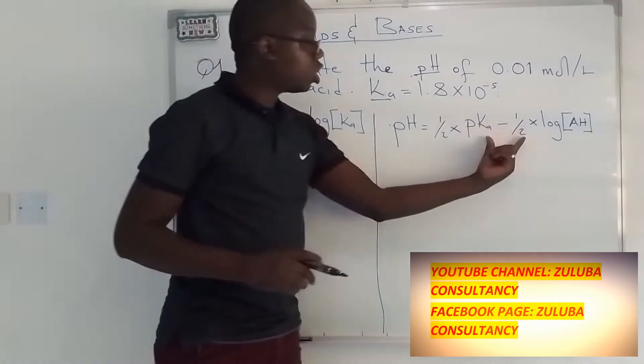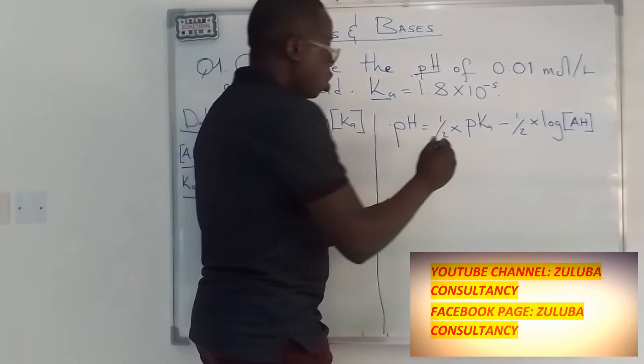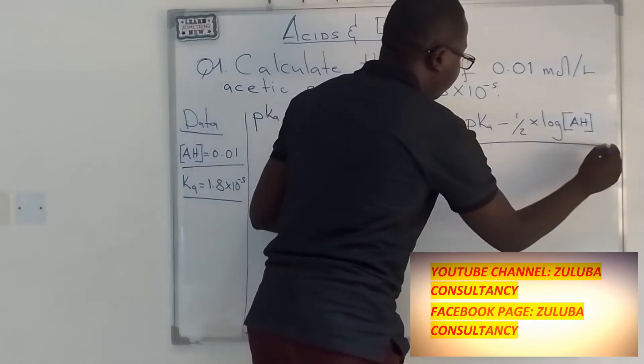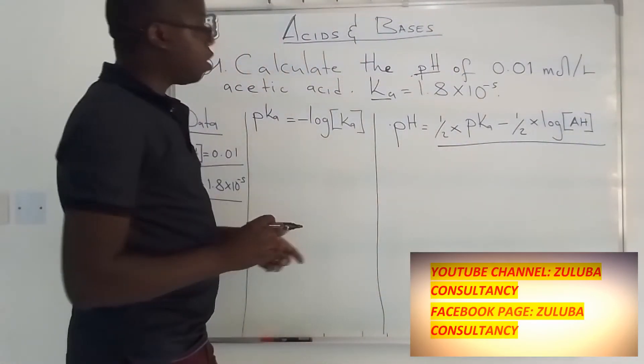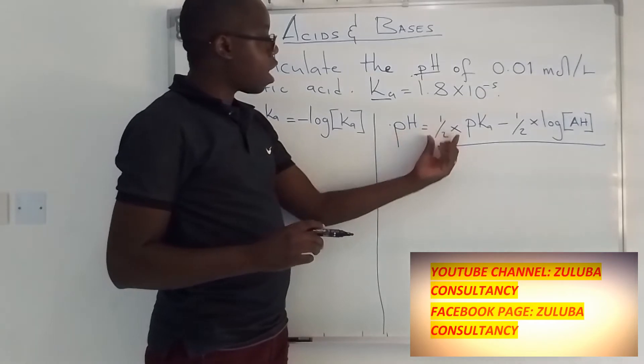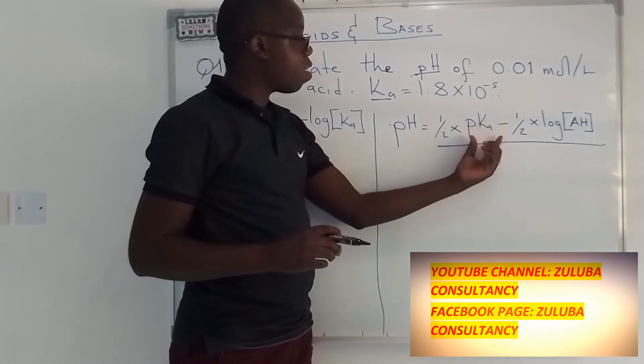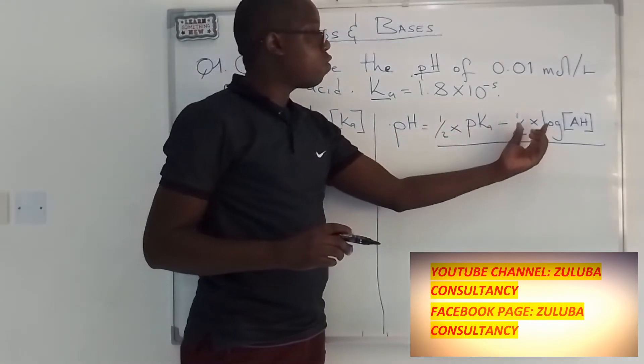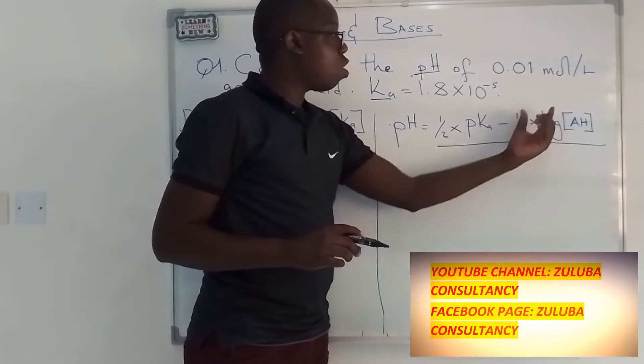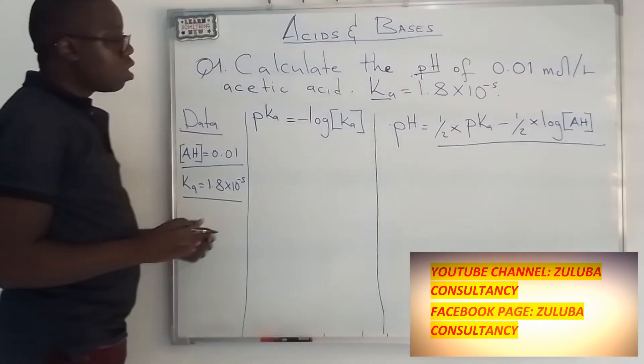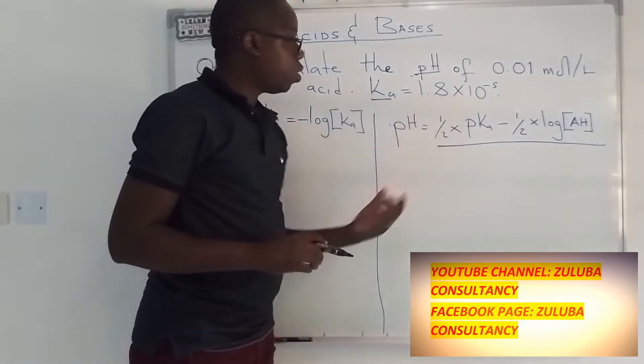In this relationship, it gives us the pH. So the pH of a weak acid can be calculated by half of the pKa minus half of the log of the concentration of that acid. So let's see how we do this.